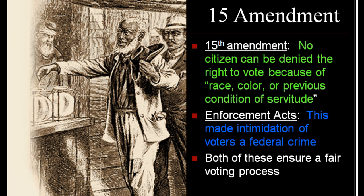This was further reinforced by the Enforcement Acts, which made the intimidation of voters a federal crime. What would happen is white southerners, often members of the Ku Klux Klan, would appear at the polls and either physically or otherwise intimidate African Americans to keep them from voting. Both the 15th Amendment and the Enforcement Acts were really an effort on the part of the Radical Republicans to ensure a fair voting process.